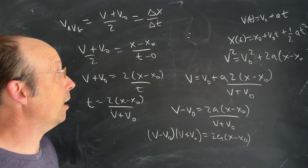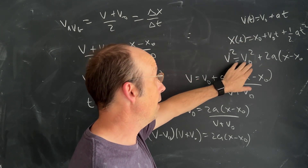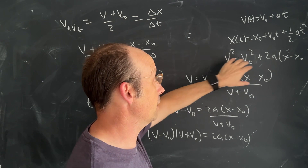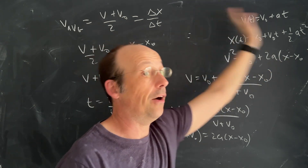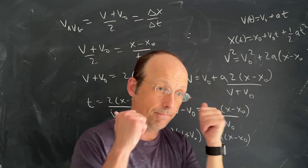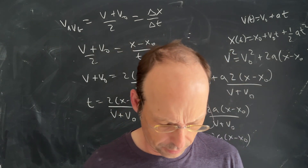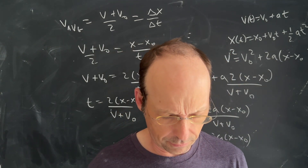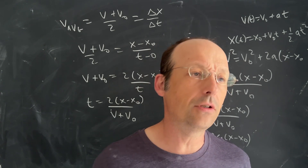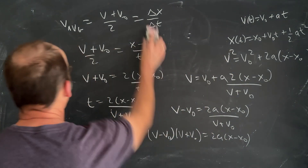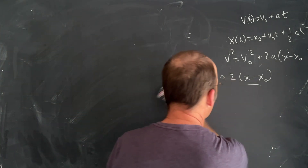So with these three kinematic equations, we can find velocity as a function of time, position as a function of time, and the third one finds the final velocity in terms of initial and final position and acceleration — without dealing with time. Next, let's talk about gravity quickly, and then I'll make another video with problems.